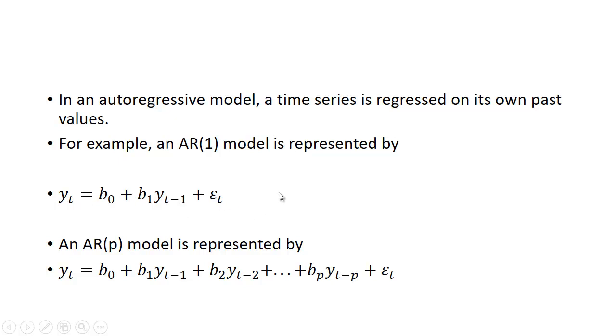We can also represent this model by what's called an AR(p) model, or generalize it to an AR(p) model. That means instead of just having one lag variable, we're going to have p lag variables. So we might have two lags, three lags, five lags, etc. And again, the model looks the same.